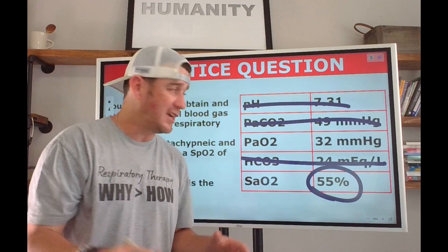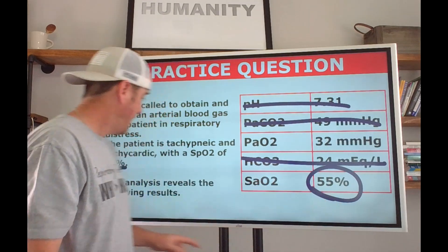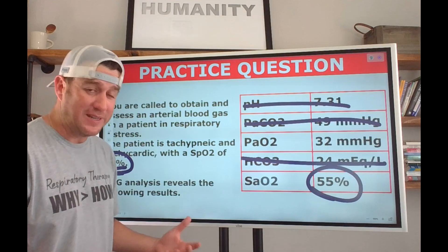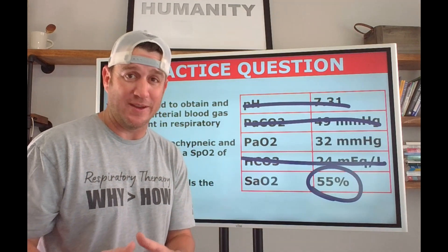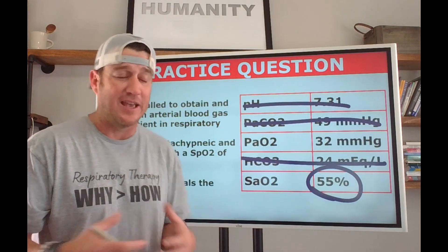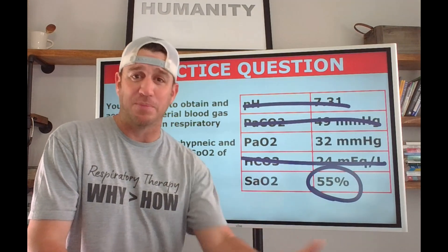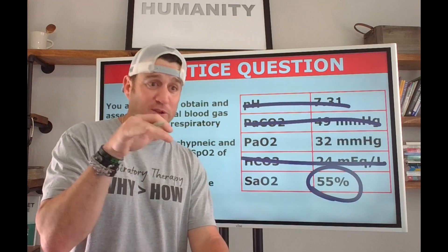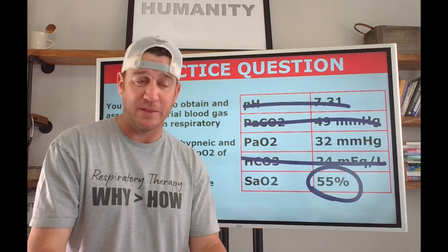Now, do you think a patient will have a saturation of 55% on the blood gas and a pulse ox at 88%? Probably not. That's how you know this was a venous blood gas. You might ask yourself: how would I get venous blood when I was sticking an artery? Well, next to every radial artery are two veins that run parallel to it, so it's very easy to accidentally get venous blood.